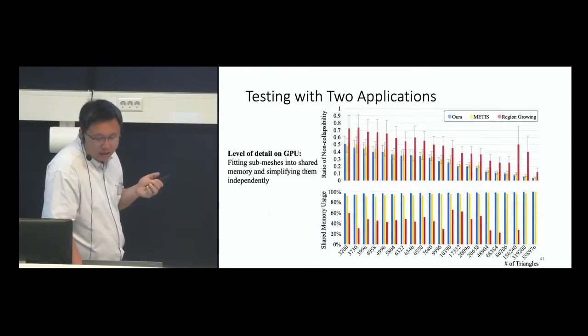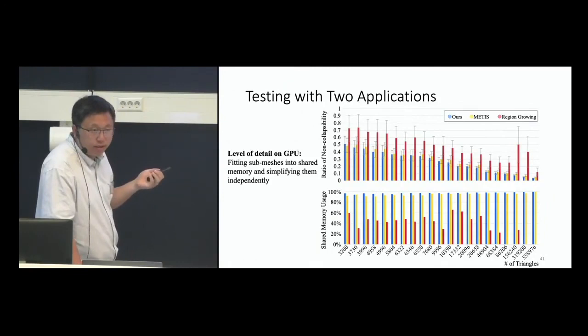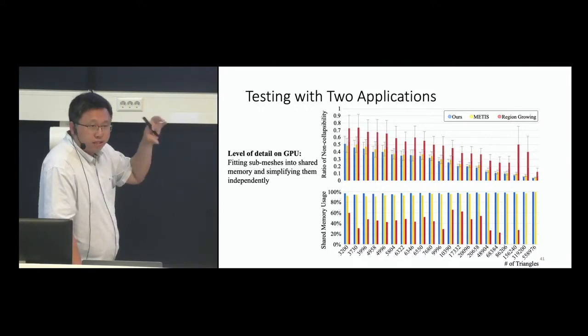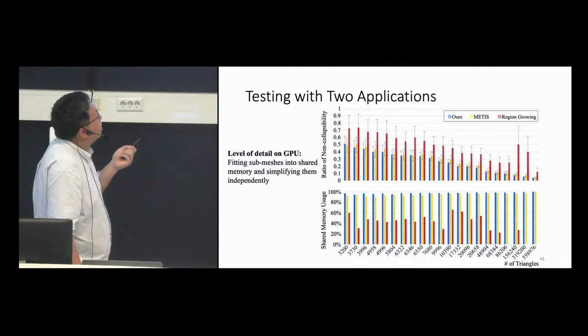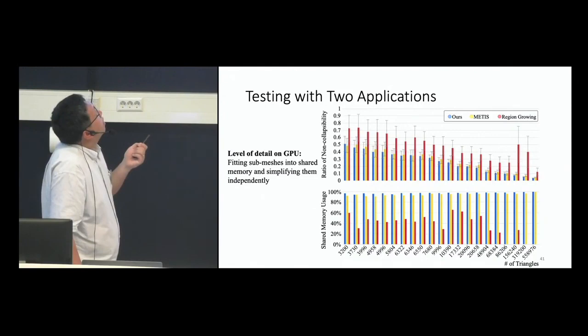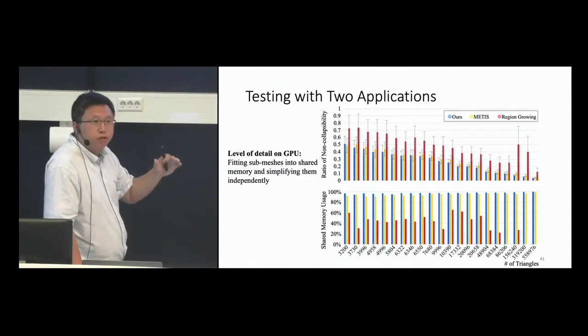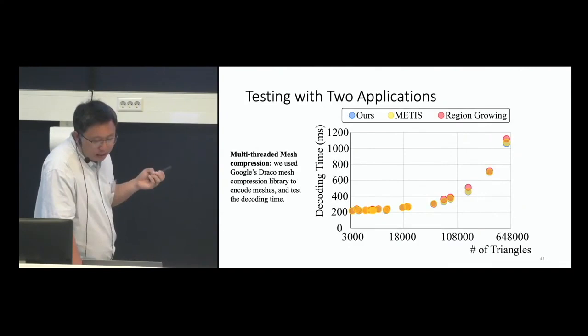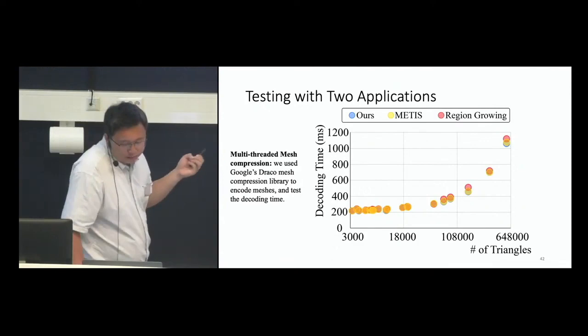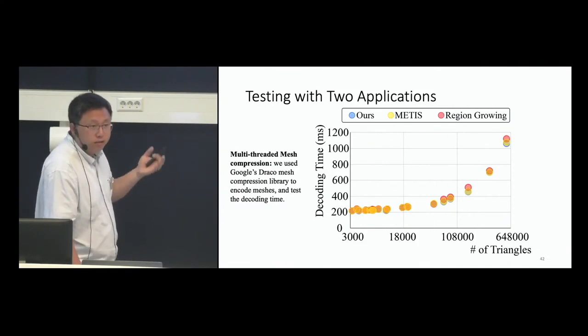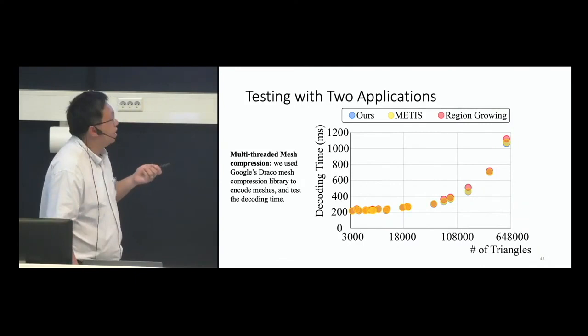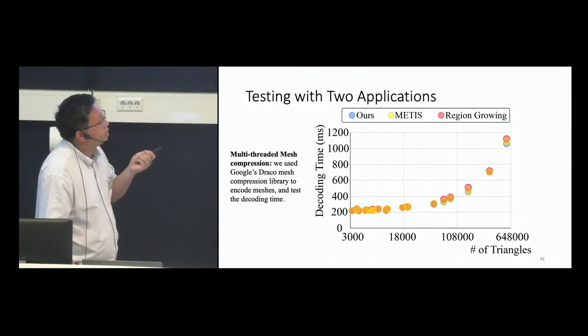We tested two applications. First, level of detail on the GPU — not view-dependent LOD, but submesh-level LOD where each submesh fits into shared memory, achieving high shared memory usage and a lower ratio of non-collapsibility since boundary edges are minimized. Second, mesh compression: we used Google's DRACO library to encode meshes and tested decoding time on CPU using multi-threading. Our balanced approach distributes workload evenly. For large triangle counts the advantage is significant; for small meshes the difference is not significant.